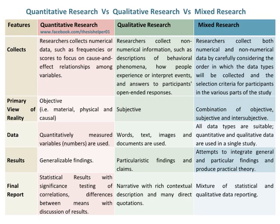Results of quantitative research are based on generalizable findings. Results of qualitative research are based on particularistic findings and claims. Results of mixed research attempt to integrate general and particular findings and produce practical theory. The final report of quantitative research includes statistical results with significance testing of correlations and differences between means. The final report of qualitative research is narrative with rich contextual description and many direct quotations. The final report of mixed research is a mixture of statistical and qualitative data reporting.